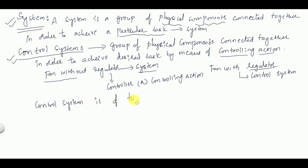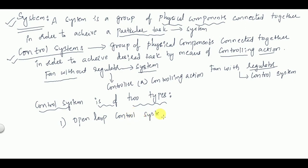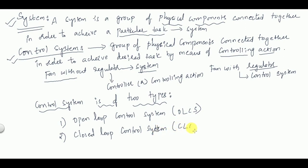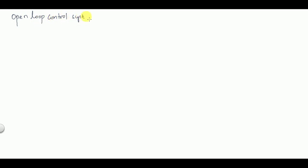A control system is of two types. The first one is open loop control system and the second is closed loop control system.